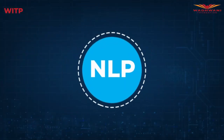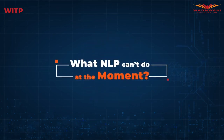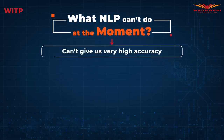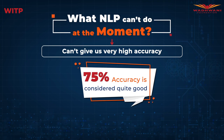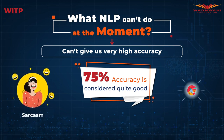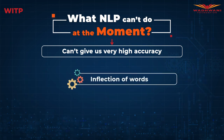We've talked about fascinating use cases of NLP. Let's also understand what NLP cannot do at the moment. Currently, NLP cannot give very high accuracy on tasks — even 75% accuracy is considered quite good. One reason for this is that languages have complex attributes such as sarcasm, irony, idioms, and many more. Even the inflection of words can change the meaning of a sentence.